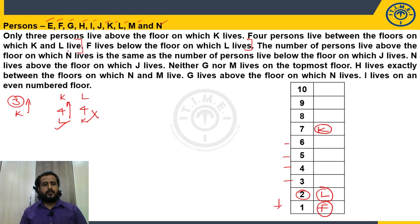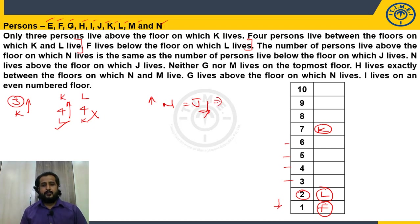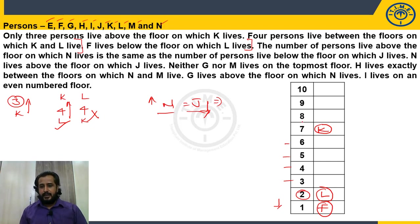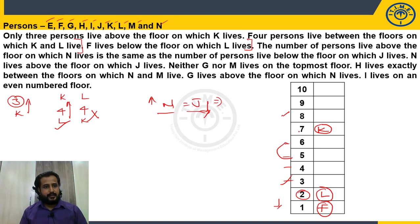Next clue: the number of floors above N is the same as the number of floors below J — corresponding positions. Checking available pairs: 10 and 1 — not possible, F is on 1st; 9 and 2 — not possible, L is on 2nd; 8 and 3 — possible; 7 and 4 — not possible, K is on 7th; 6 and 5 — possible. So we have two possibilities: N on 8th and J on 3rd, or N on 6th and J on 5th.